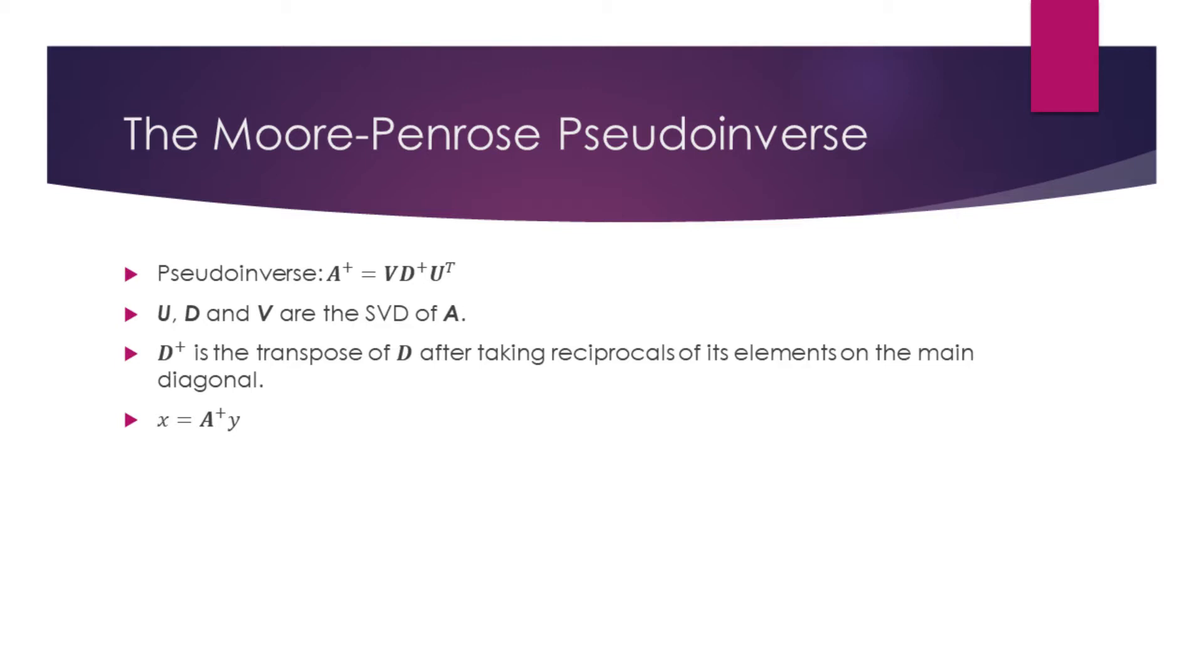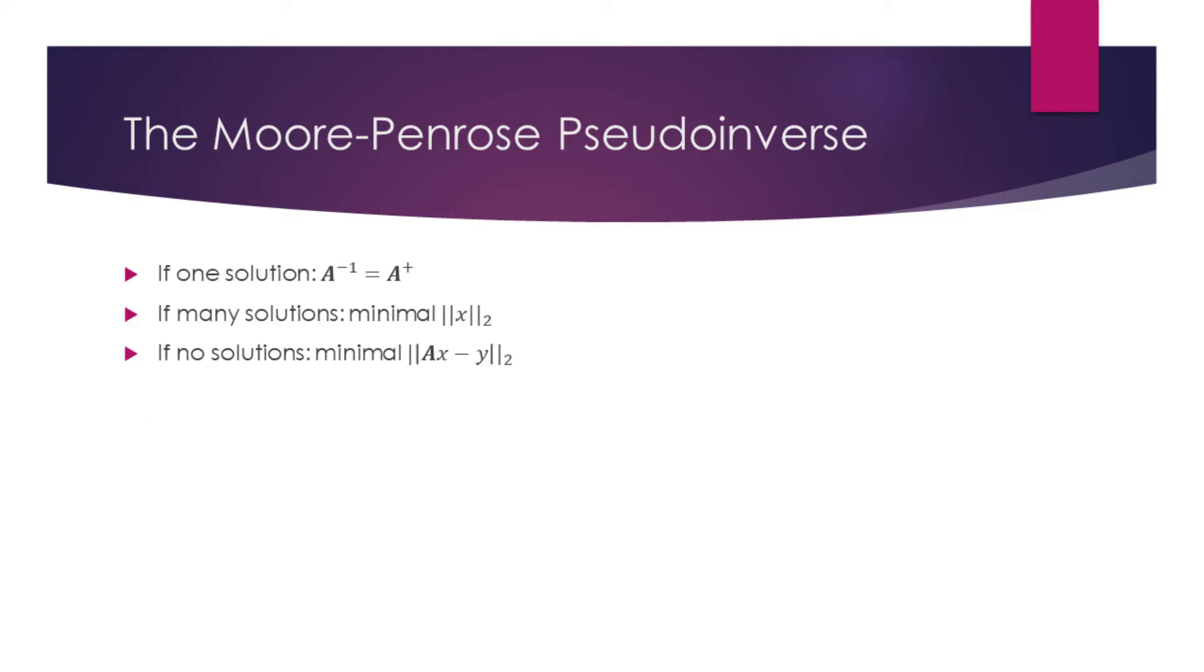We can then find x by multiplying the pseudoinverse of A by y. Using this method to solve for x, if A has a unique mapping to its inverse, pseudoinverse will be the same as the actual inverse, so we will find the exact x.